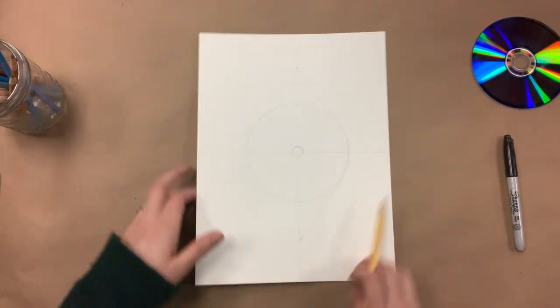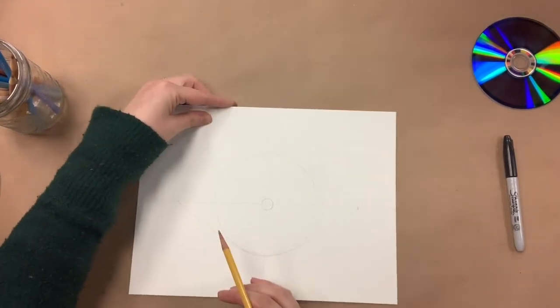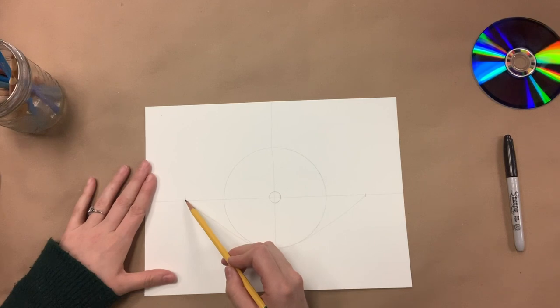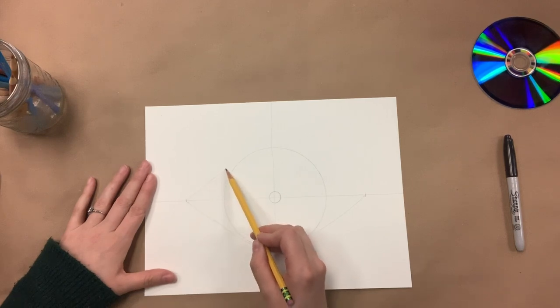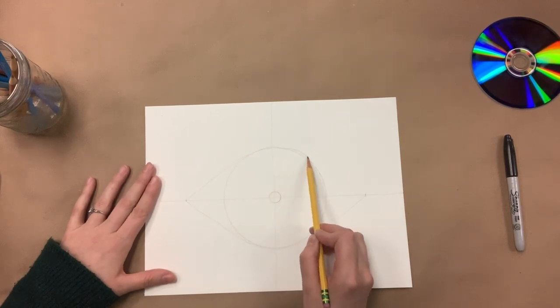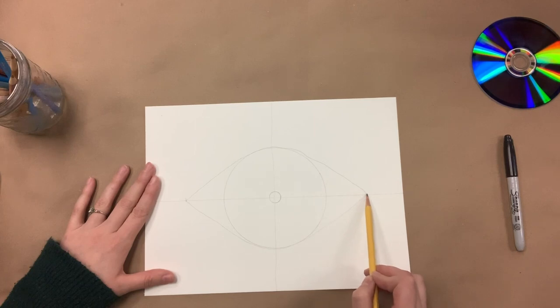And the same thing on the bottom. If it's easier for you to flip the paper, I'm going to draw up to the top, around, and connect your point.